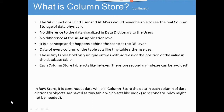After going through numerous blogs and tutorials, I was finally enlightened. The column store is just a concept and it happens behind the scenes at the database level, so we cannot see it. Data on each column of the table acts like a tiny table itself, so they act like indexes. Therefore, secondary indexes can be avoided in the HANA database.